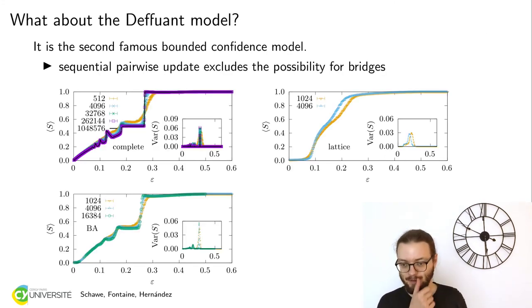Maybe some of you will ask, what about the Deffuant model, which is the other famous bounded confidence model? The answer is, it's different because those bridges cannot persist in a Deffuant model. If you have this Deffuant dynamics where you have pairwise interaction, which is also sequential, then your bridges will directly break in just very few iterations.